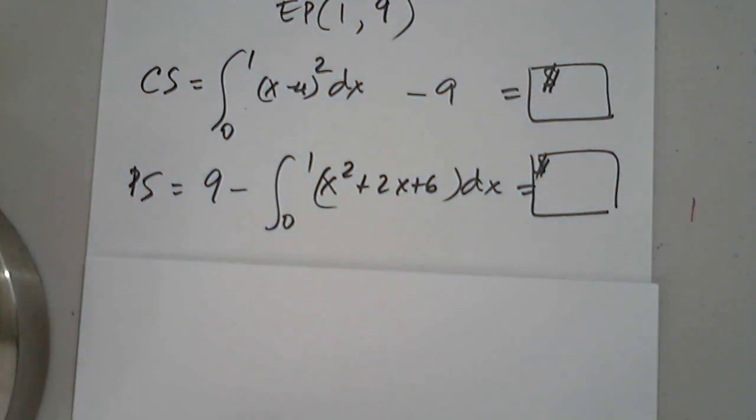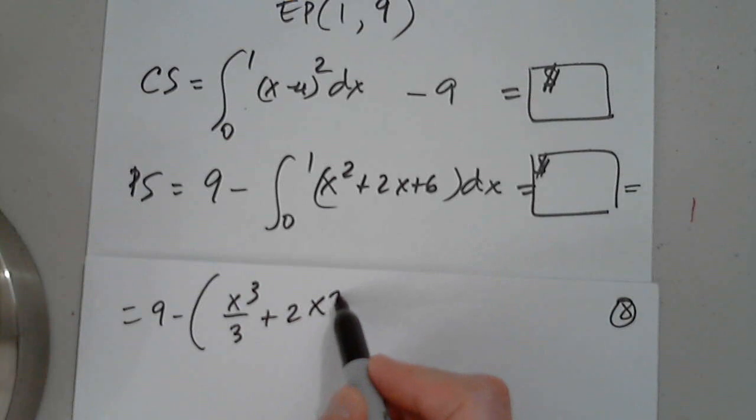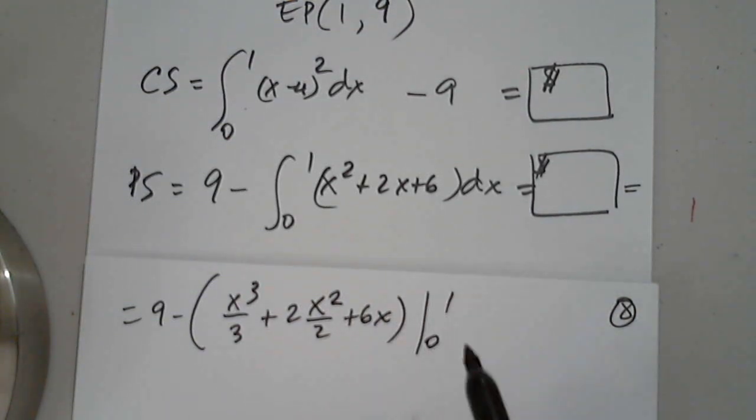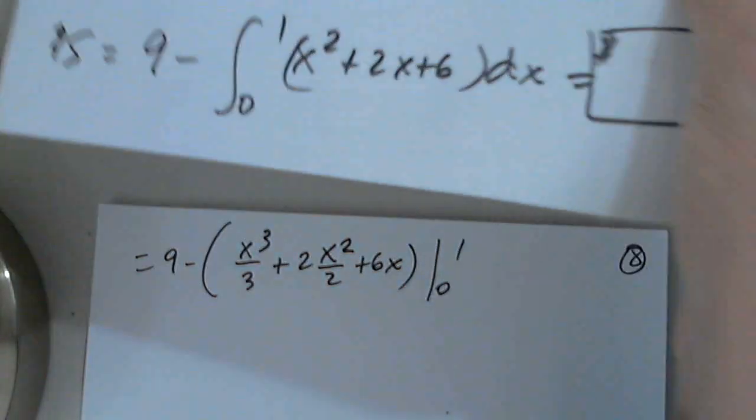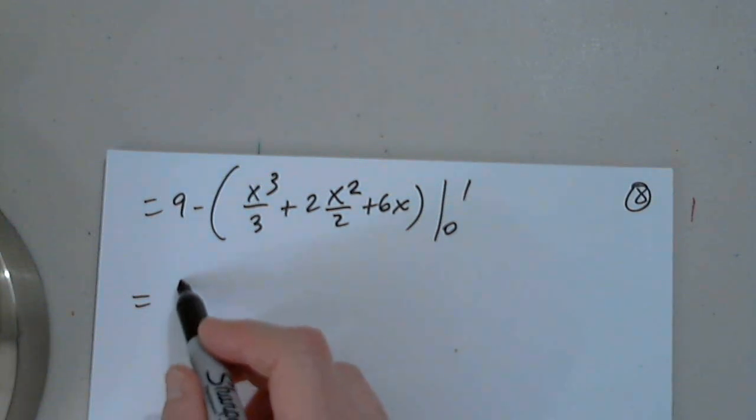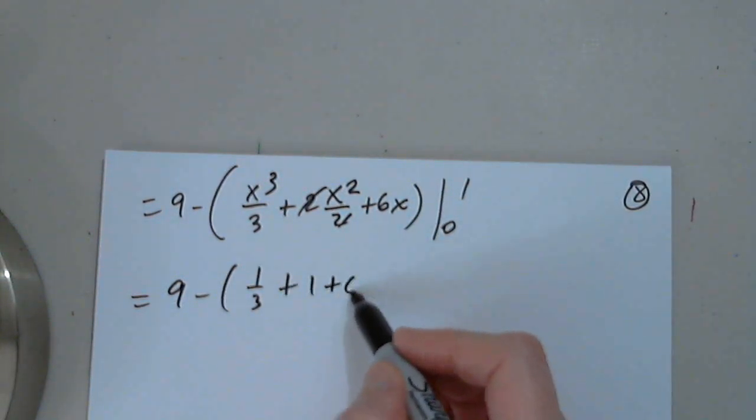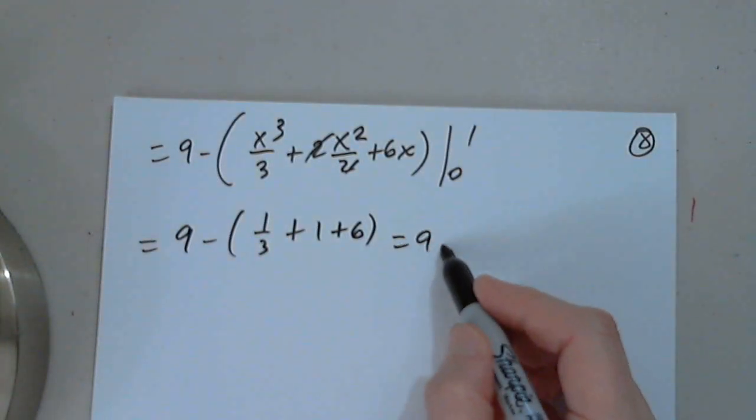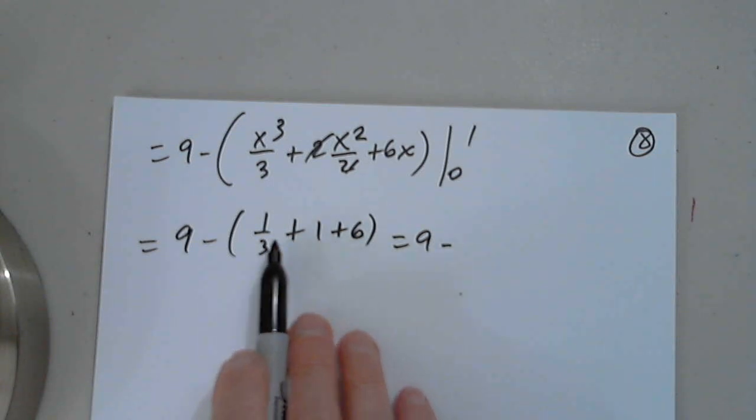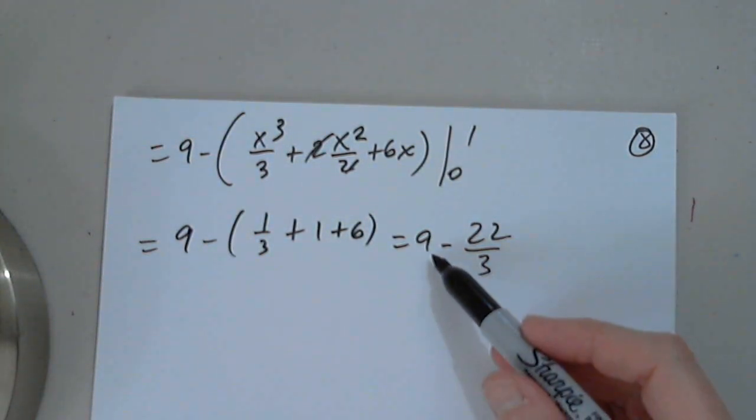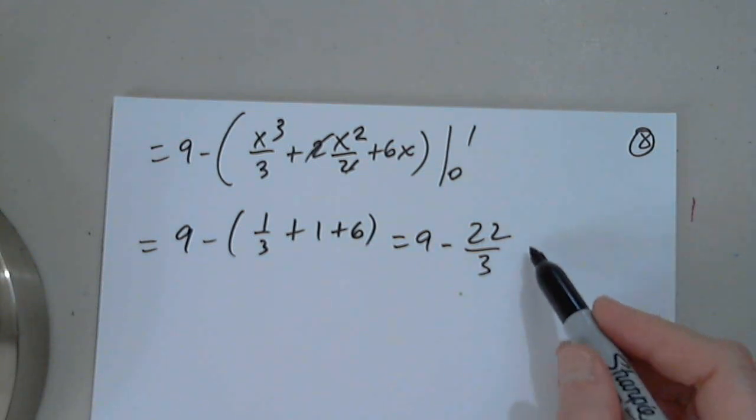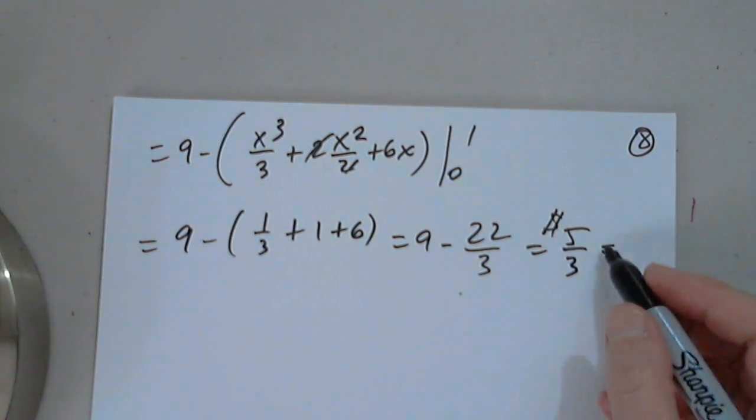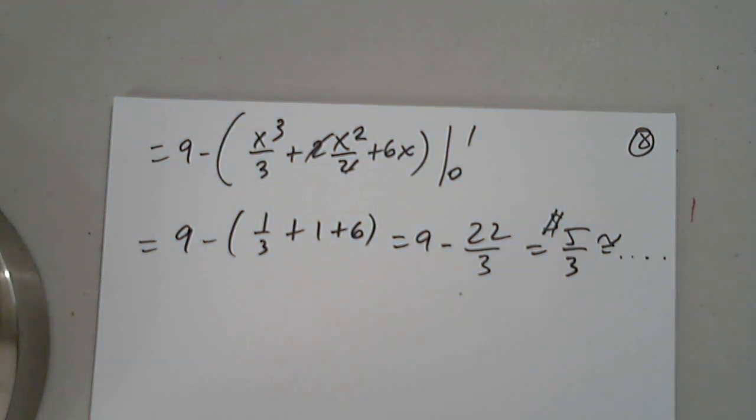So then the producer surplus is 9 minus the integral from 0 to 1 of (x cubed over 3 plus 2x squared over 2 plus 6x). Luckily it's a polynomial, I don't have to plug in 0. I will only plug in 1, so 9 minus 1 third plus 1 plus 6. So this is 9 minus, so this is 7, 3 times 7 is 21, 22. So 3 times 9 is 27 minus 22 is 5 thirds, and this is in dollars. So you can approximate that, 1.66 or 1.7 roughly. Good.